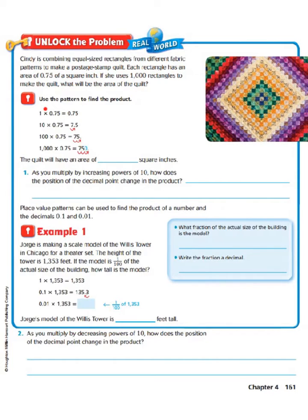The first thing we need to do is use the pattern to find the product. We know that 1 times 75 hundredths equals 0.75, because our identity property says anything multiplied by 1 is its number. So 10 times 75 hundredths equals 7.5 tenths — let's take a look at that.